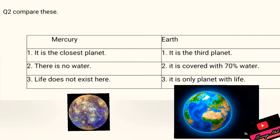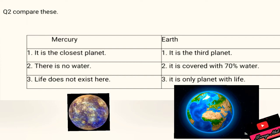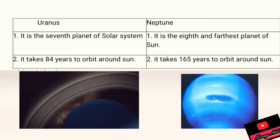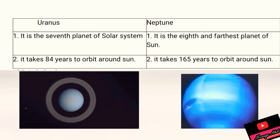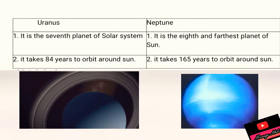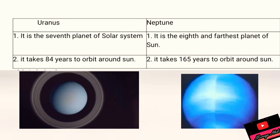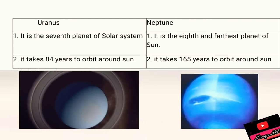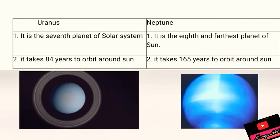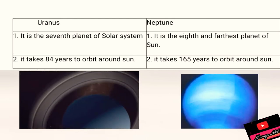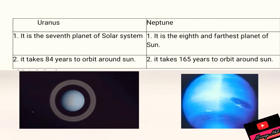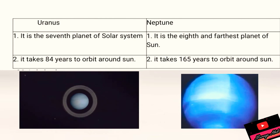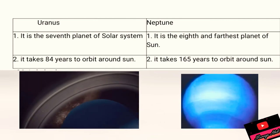Second comparison is of Uranus and Neptune, the twin planets, seventh and eighth planet. First difference between Uranus and Neptune is their sequence. Uranus is the seventh planet of solar system and Neptune is the eighth and farthest planet of the Sun. Uranus takes 84 years to orbit around Sun whereas Neptune takes 165 years to orbit around Sun.